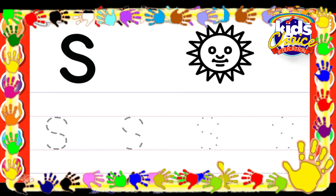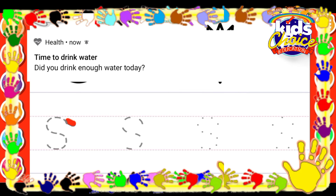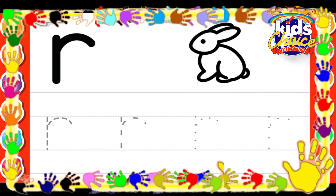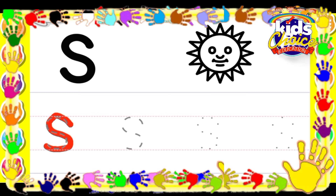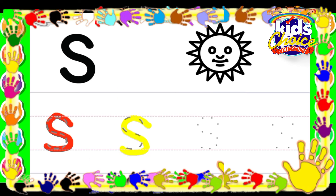S for Sun. R for Rabbit. S for Sun. Yellow. Green. Blue.